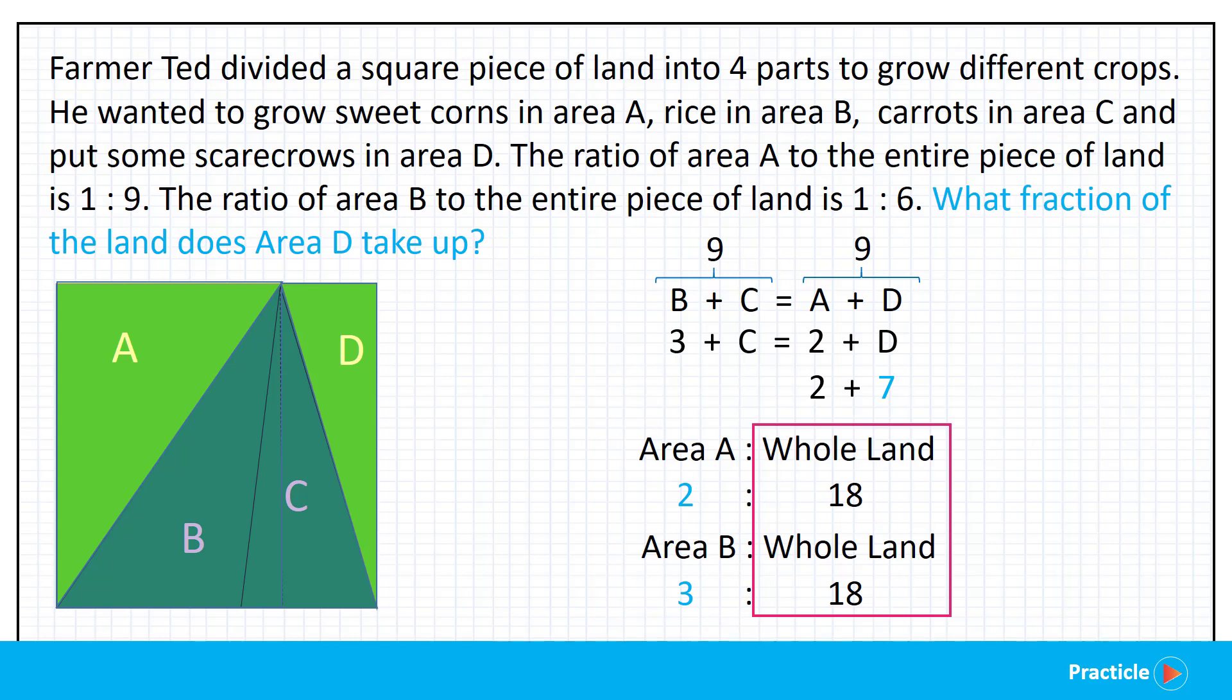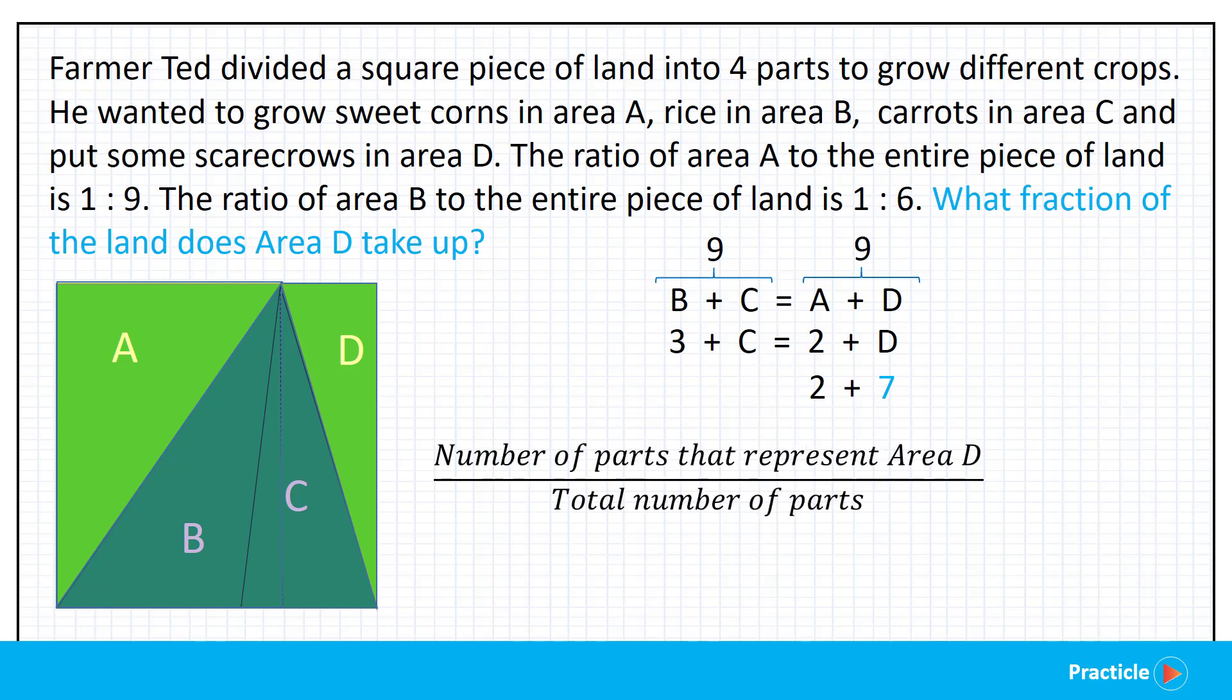And now it's time to answer this ratio question. What fraction of the land does area D take up? To find the fraction, we are going to put the part that represents area D on top, and the parts that represent the whole area of the land below. And this gives us an answer of 7 over 18. And that's how we know that area D takes up 7 over 18 of the land.